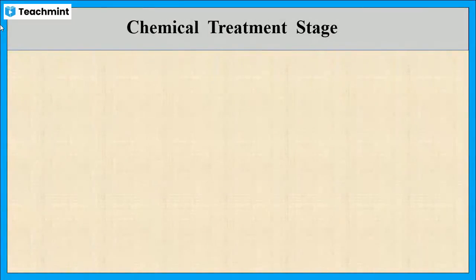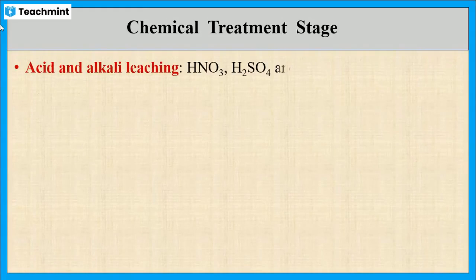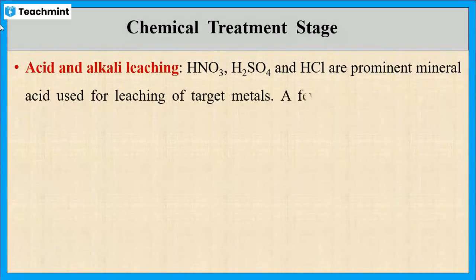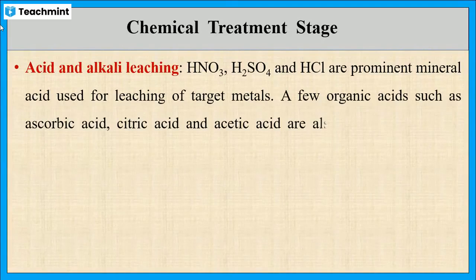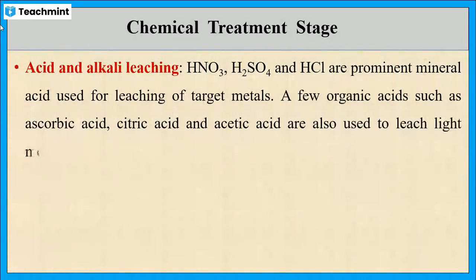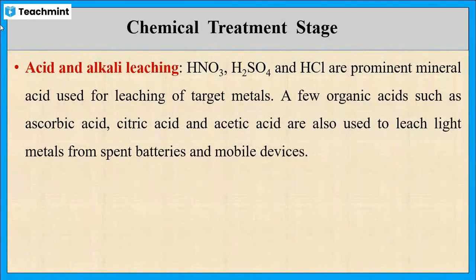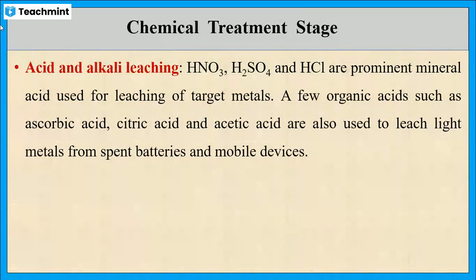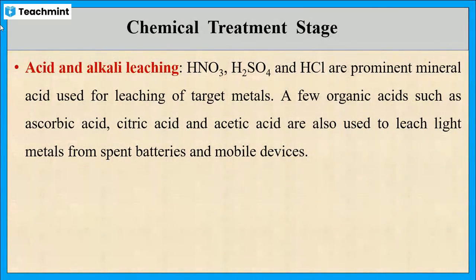The next leaching agent is acid or alkali. Many metals are easily soluble in acids like nitric acid, sulfuric acid, and hydrochloric acid. Even some organic acids like ascorbic acid, citric acid, and acetic acid may also be used to leach some of the metals.